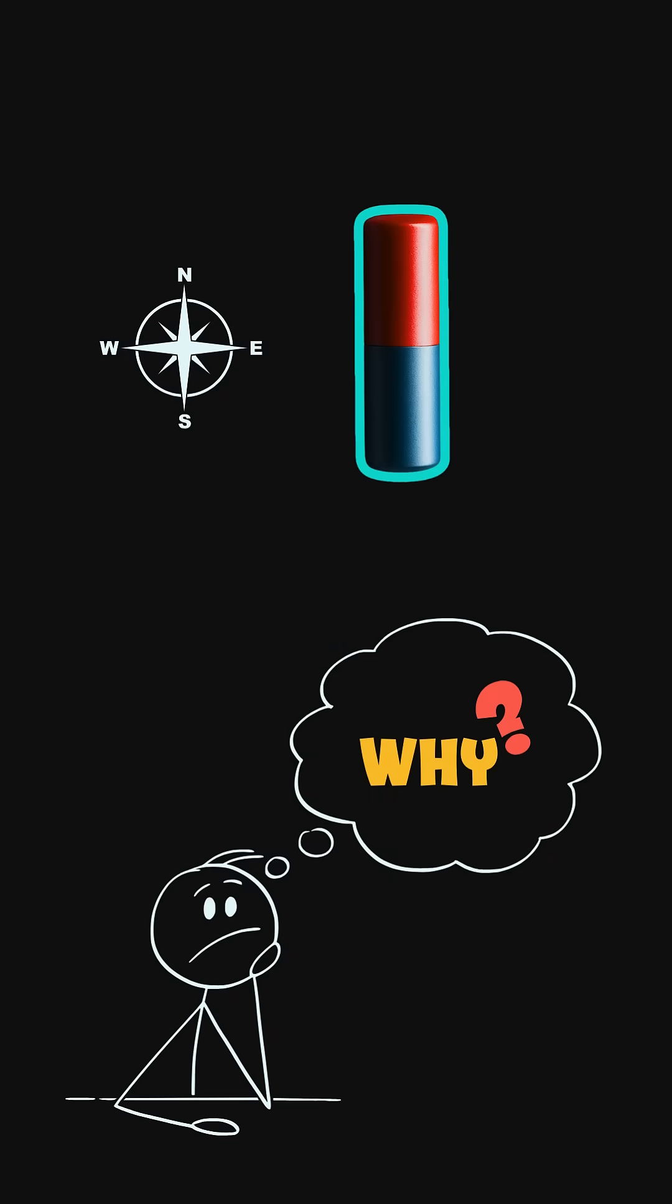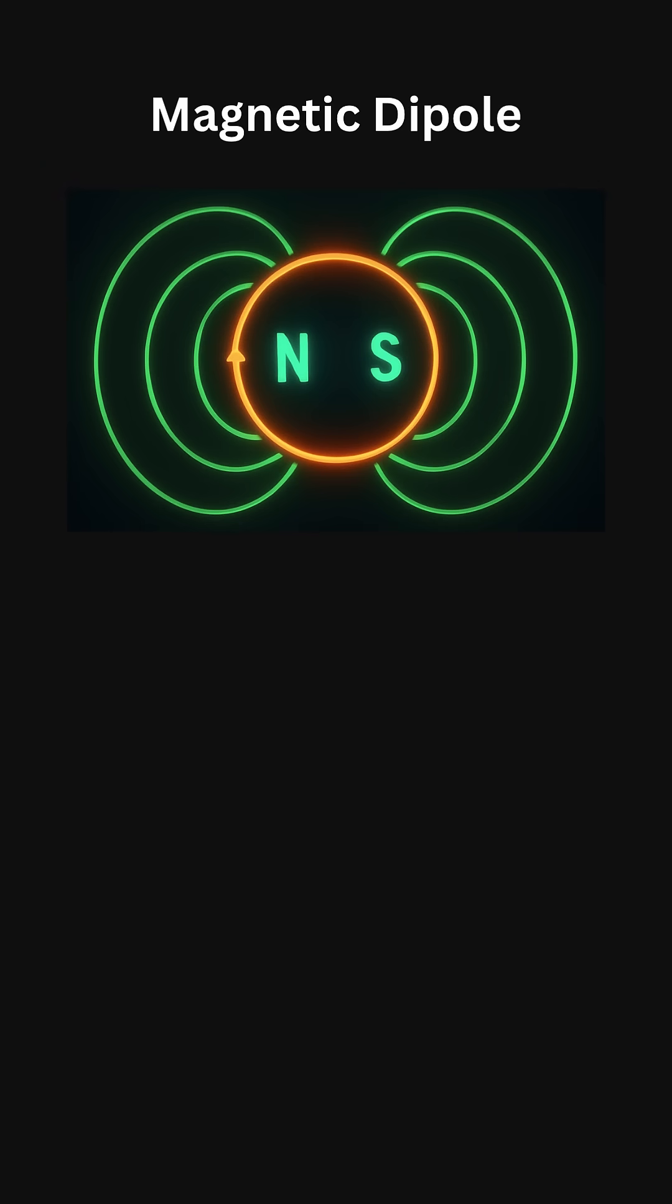Have you ever wondered why a magnet always comes with two poles, a north and a south? That's the magic of the magnetic dipole.